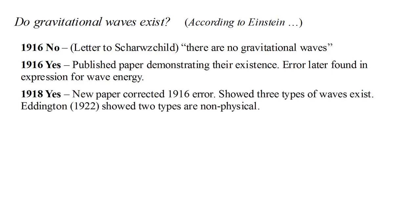In 1918 he published a paper correcting that error. He established that three types of gravitational waves exist, one being the type we've solved for previously.